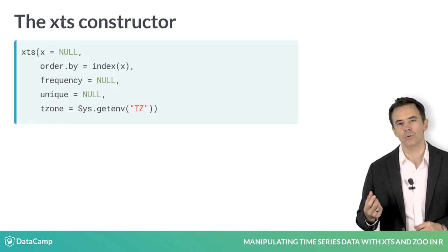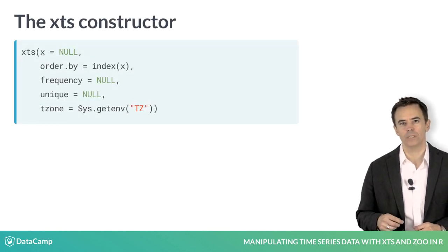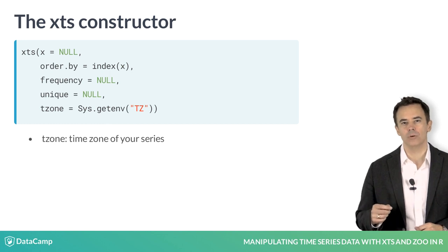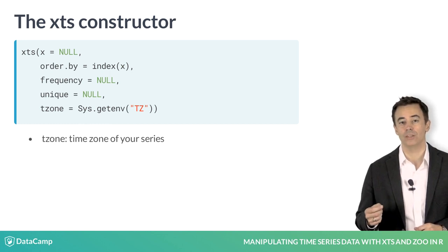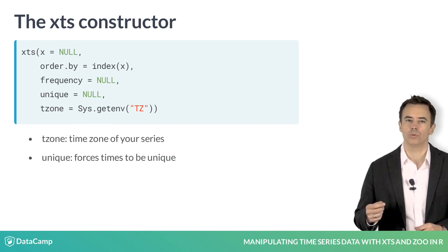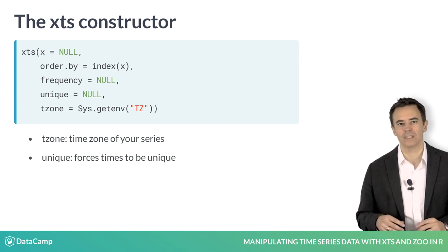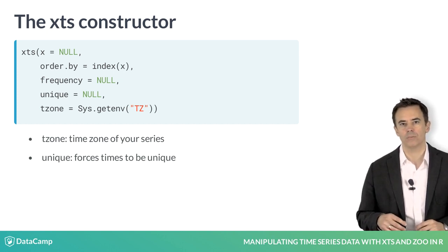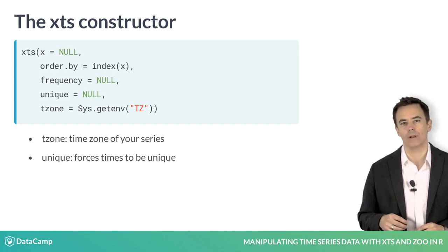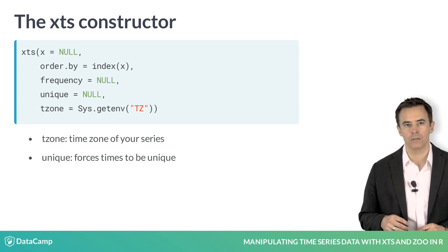The constructor has a few optional arguments. The most useful being tzone, to set time zones, and unique, which will force all times to be unique. Note that XTS doesn't enforce uniqueness for your index, but you may require this in your own applications.